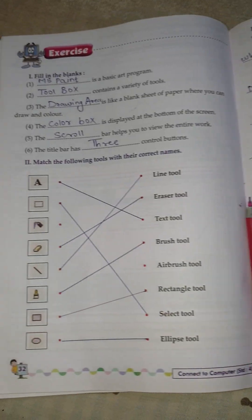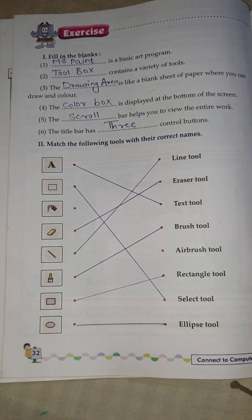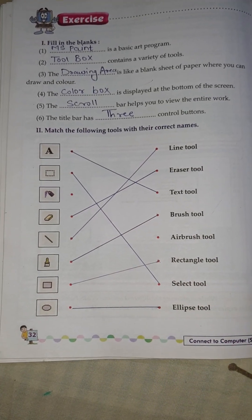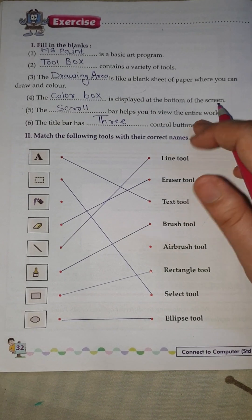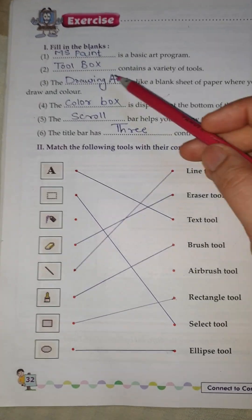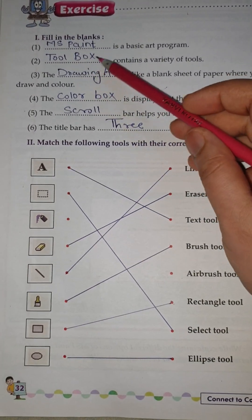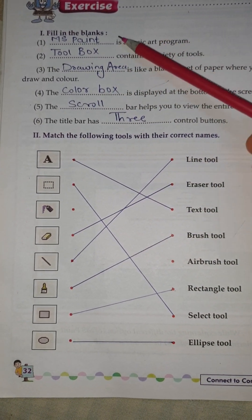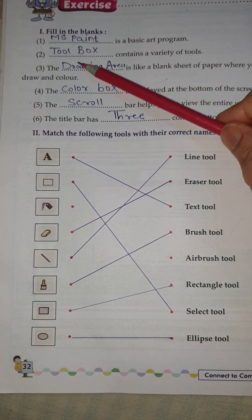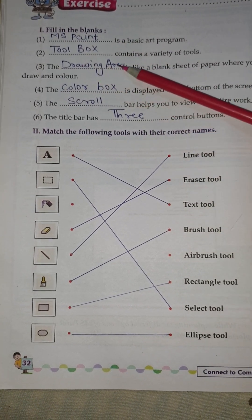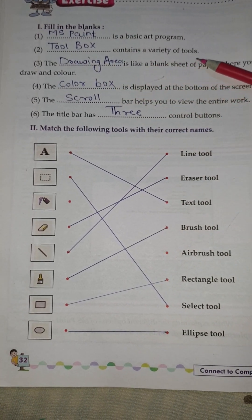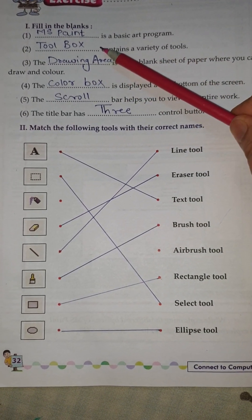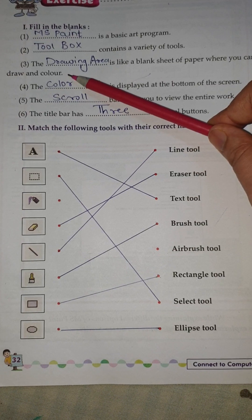Exercise, Question No. 1: Fill in the blanks. No. 1: Dash is a basic art program — MS Paint. No. 2: Dash contains a variety of tools — Toolbox.